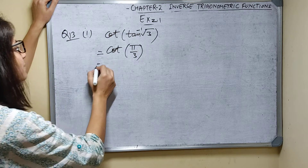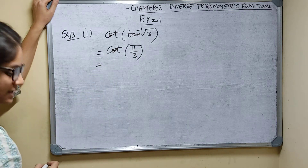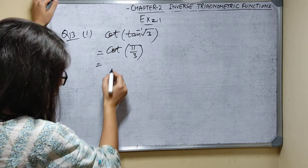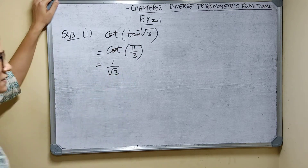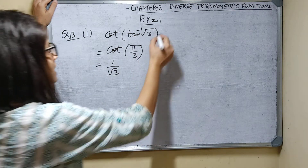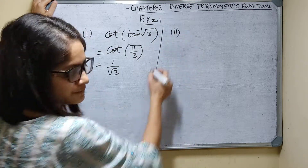Cot pi by 3 means cot of 60 degrees. Cot of 60 degrees is 1 by root 3. So this is the answer.